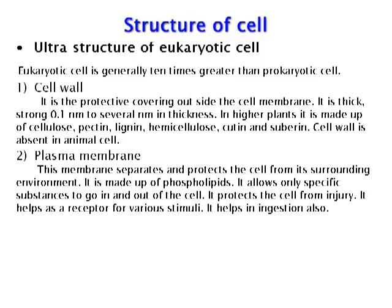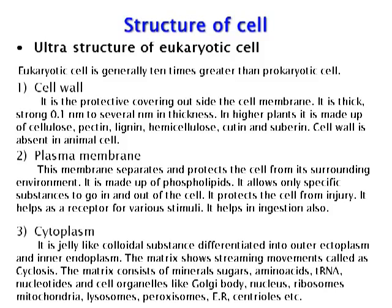Plasma membrane separates and protects the cell from its surrounding environment. It is made up of phospholipids and allows only specific substances to go in and out of the cell. It protects the cell from injury, serves as a receptor for various stimuli, and helps in ingestion. Cytoplasm is a jelly-like colloidal substance differentiated into outer ectoplasm and inner endoplasm; the matrix shows streaming movements called cyclosis.